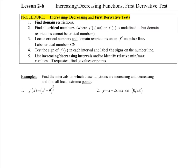This will help us find local maxes and mins. The steps are: first, check the domain — always look at the domain of a function. Second, find all critical numbers where f prime equals zero or f prime is undefined. Third, locate critical numbers and domain restrictions on an f prime number line, labeled as CN. Fourth, test the sign of f prime in each interval and label the signs on the number line.